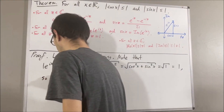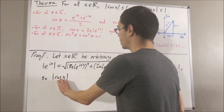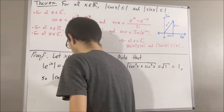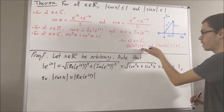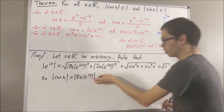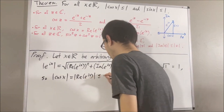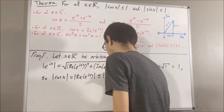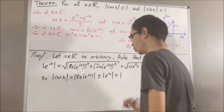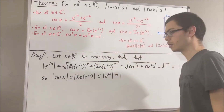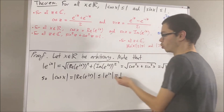So now, we know that cosine of x is equal to the real part of e to the ix, and by this fact, the absolute value of the real part of e to the ix is less than or equal to the absolute value of e to the ix, which we have just shown is equal to 1. And so, the absolute value of cosine x is less than or equal to 1.